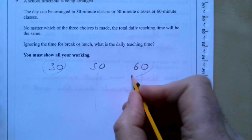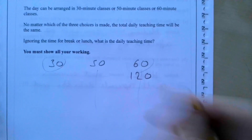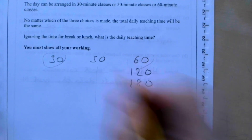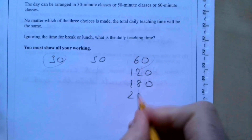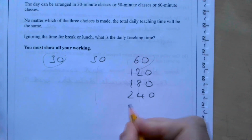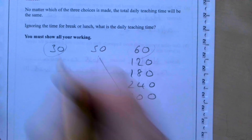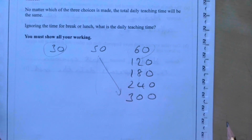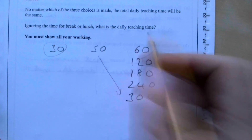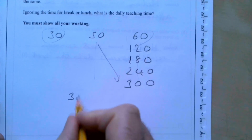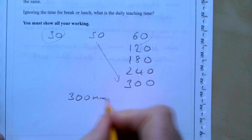The next multiple is 300, and 50 does divide into 300, as does 30. So the daily teaching time is 300 minutes, which is 5 hours.